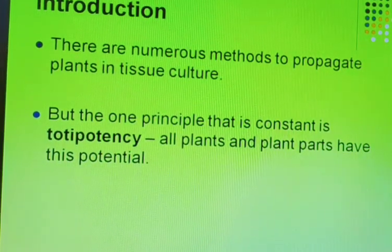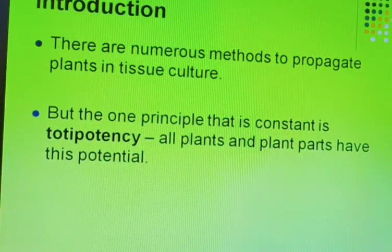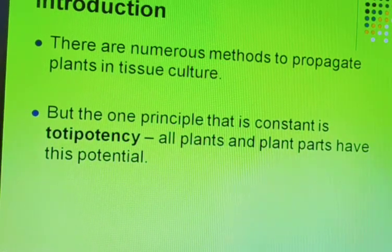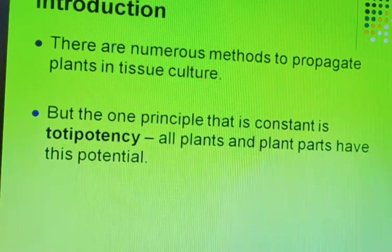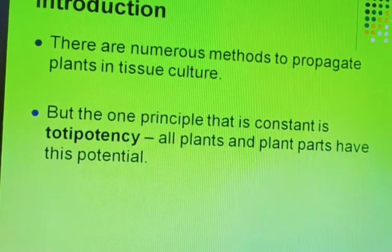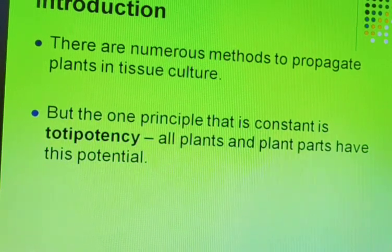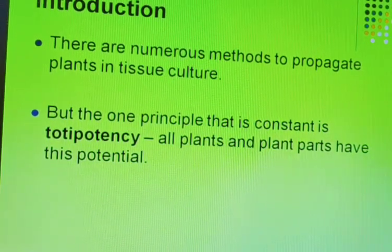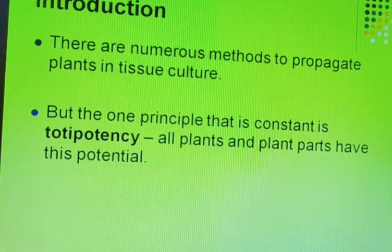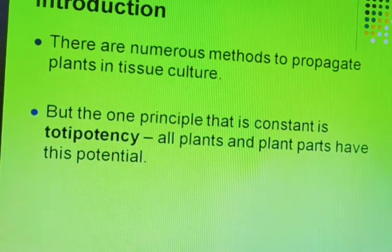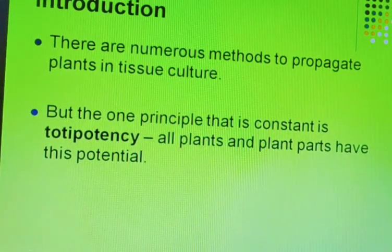There are numerous methods to propagate plants in tissue culture. Different types of methods are included, such as cell culture, callus culture, protoplast culture, anther culture, and embryo culture. These are the different types of methods or cultures used in plant tissue culture.